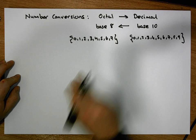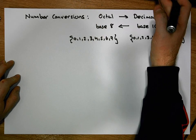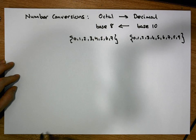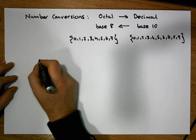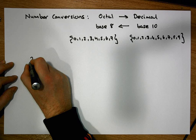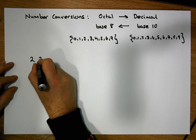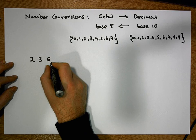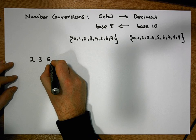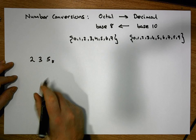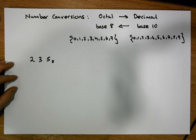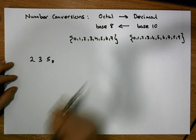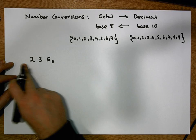Let's have a look at an octal number and convert it to decimal. Let's take the number 235 in base 8 — it's in octal — and let's convert it to decimal. Because it's a positional number system, each digit represents a multiple of a power of 8.